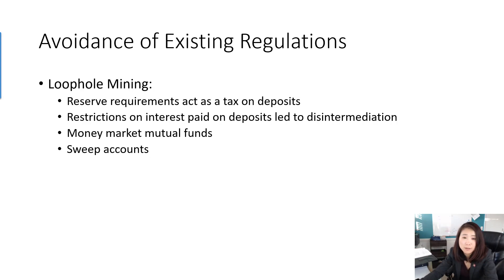The second restriction is on interest paid on deposits. The Federal Reserve required big banks not to pay interest on checking accounts. Checking accounts are very liquid — people can withdraw at any moment. The concern is that paying high interest on checking accounts would incentivize banks to lend that money out aggressively to earn higher returns, which the Federal Reserve wanted to avoid. Therefore, the Federal Reserve required commercial banks not to pay interest on checking accounts.